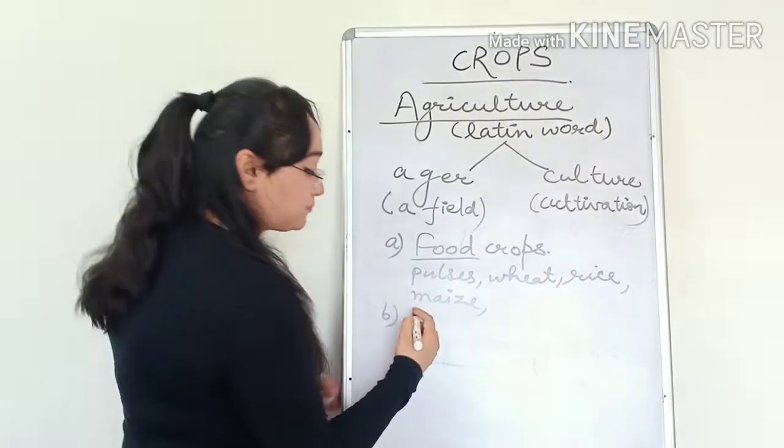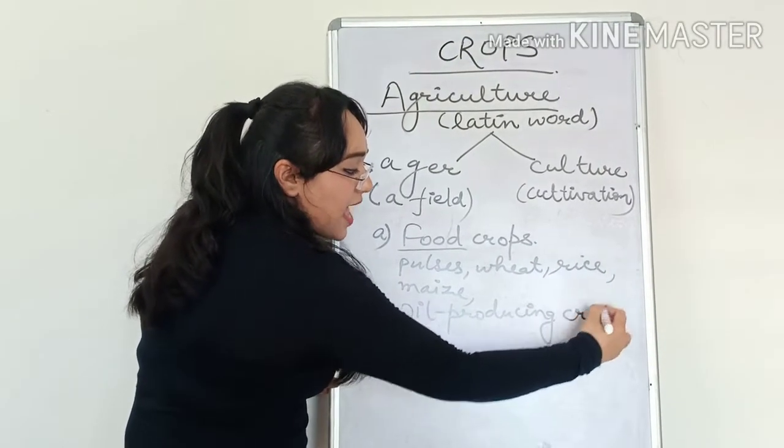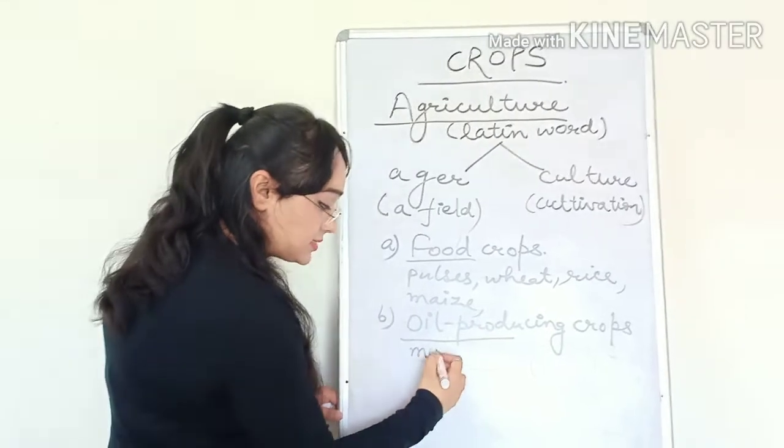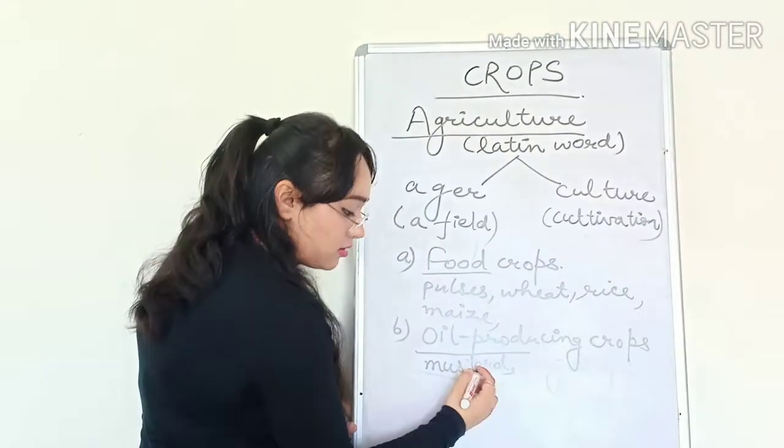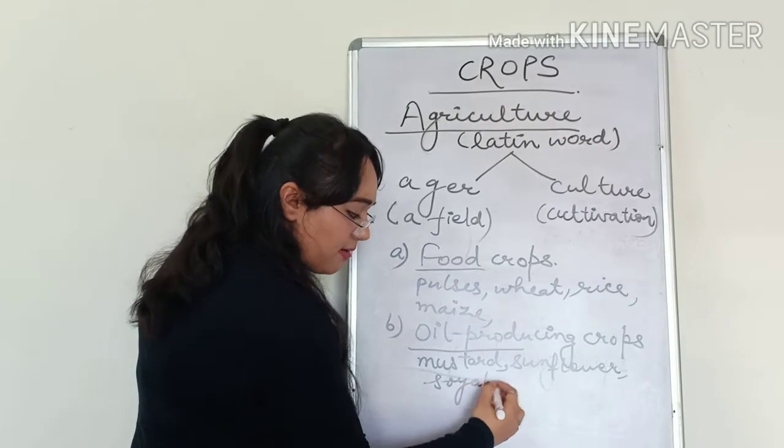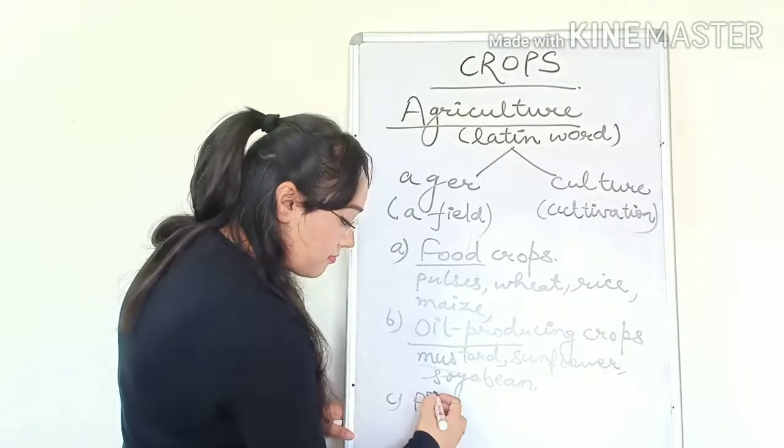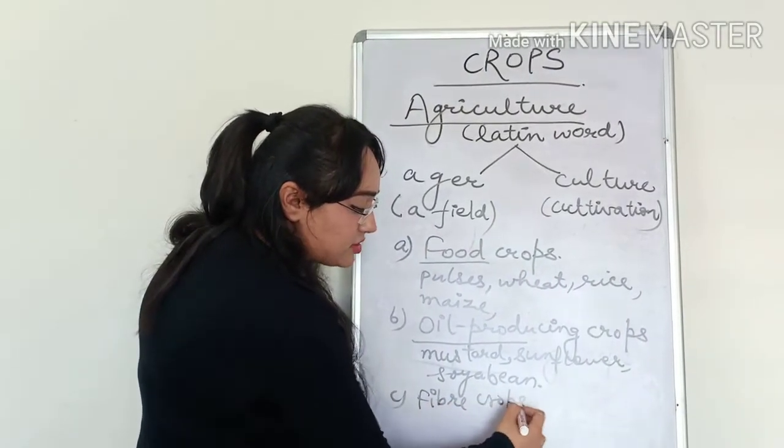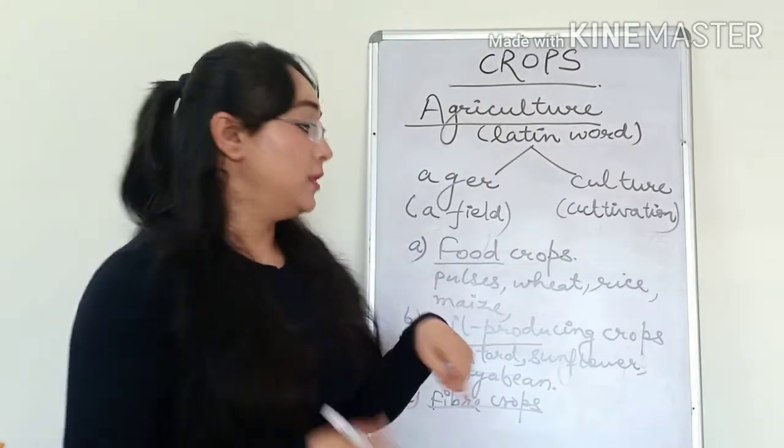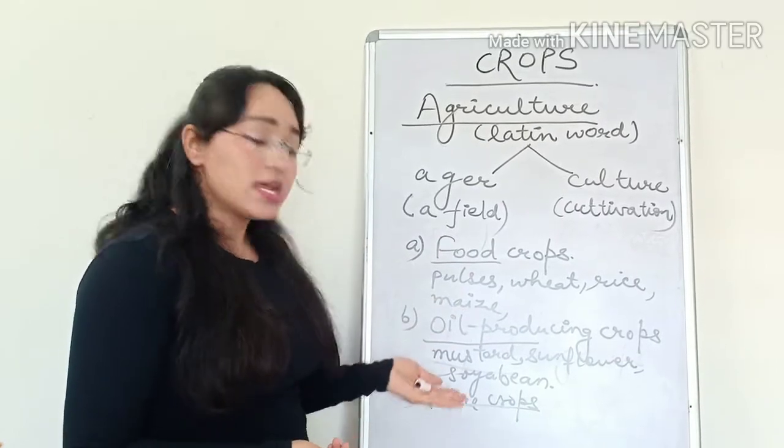Next kind of crops grown in the fields are oil producing crops. These crops are helpful in producing oils. For example, mustard, sunflower, soybean, and many more. The next kind of crops are fiber crops. In the fiber crops, we get fibers from these plants like cotton, jute, flax, and hemp. So these are mainly the three kinds of crops: food crops, oil producing crops, and fiber crops.